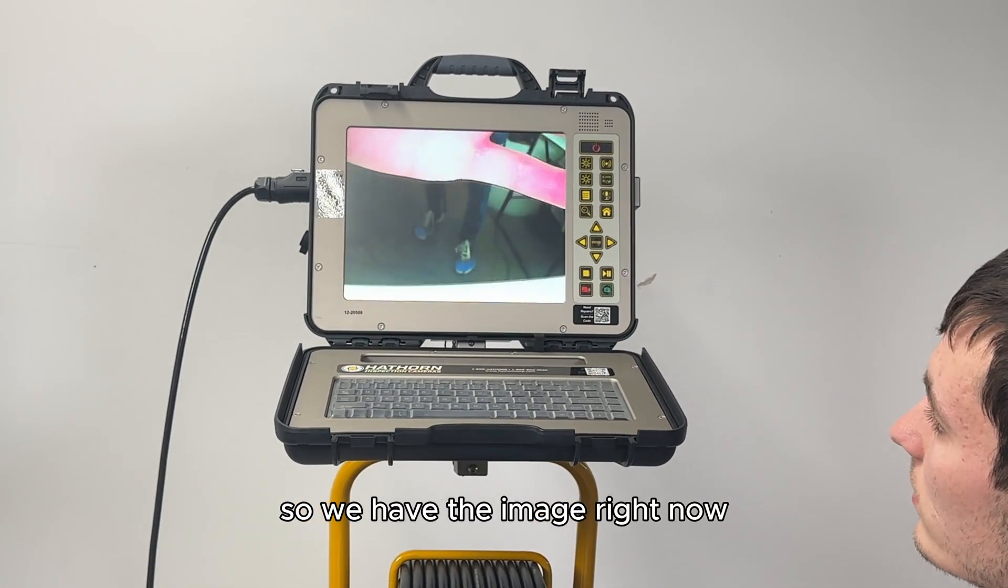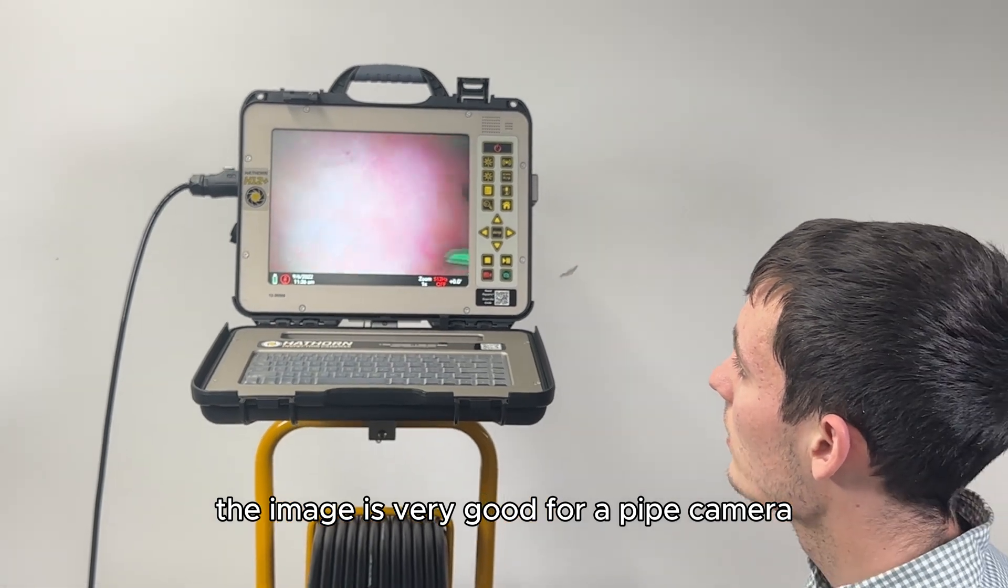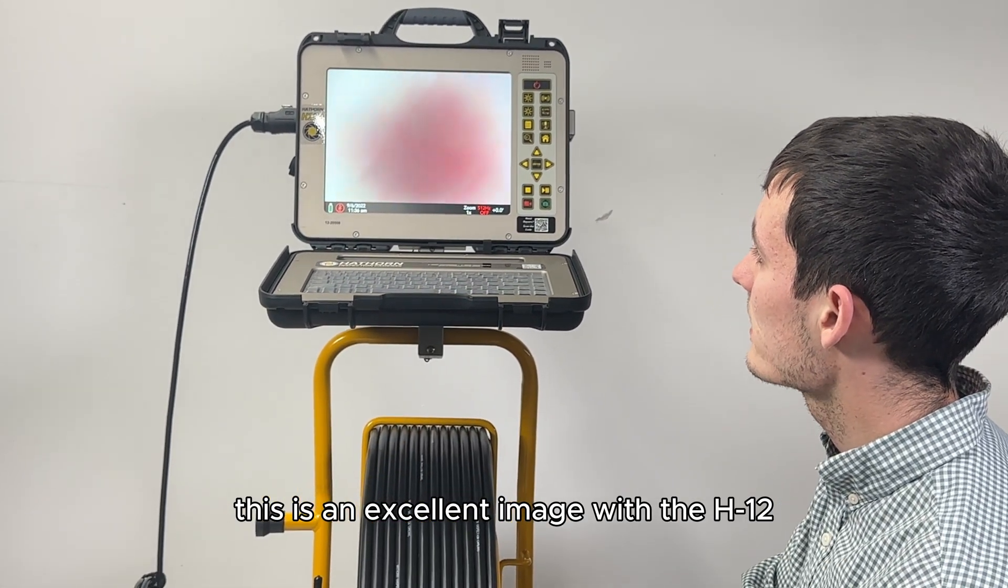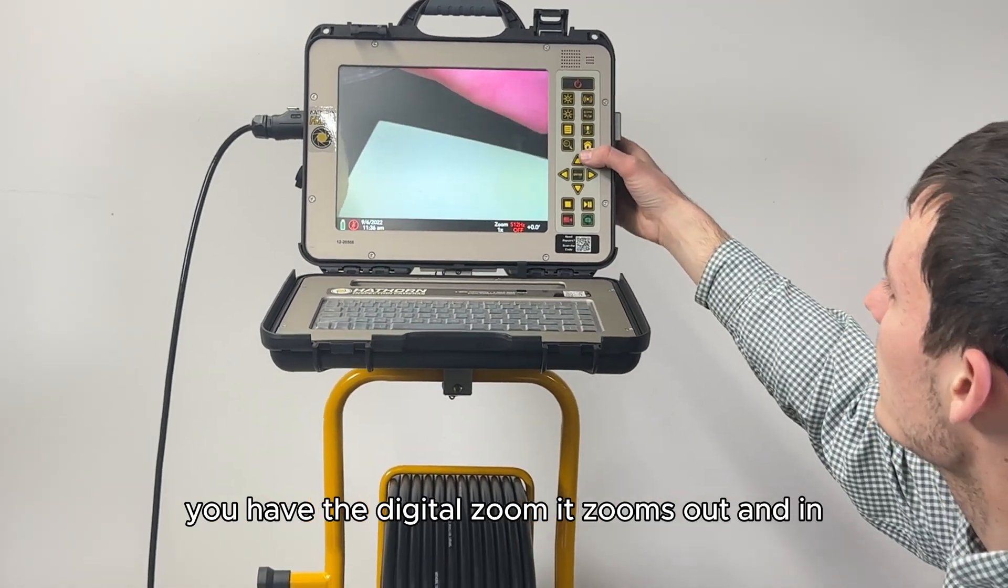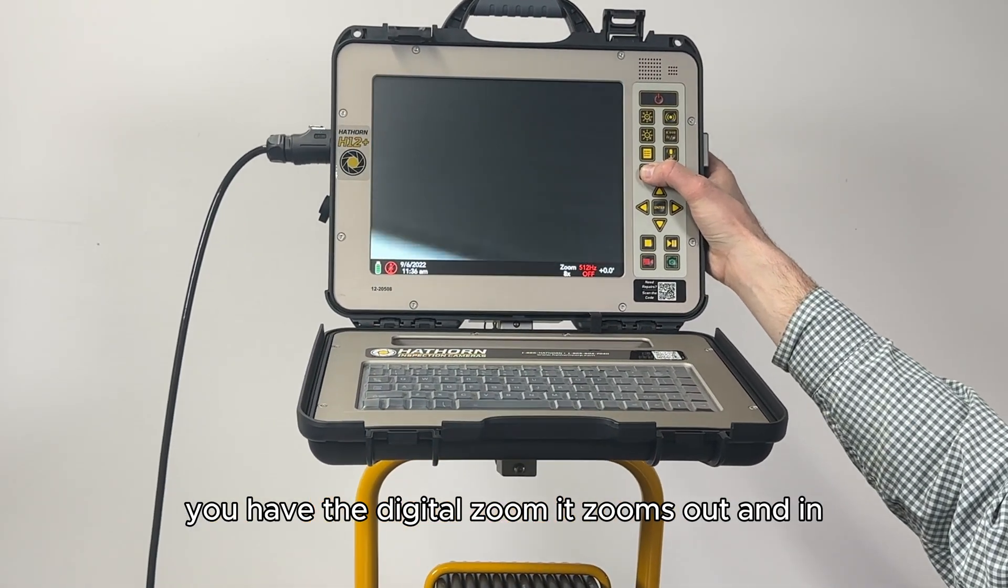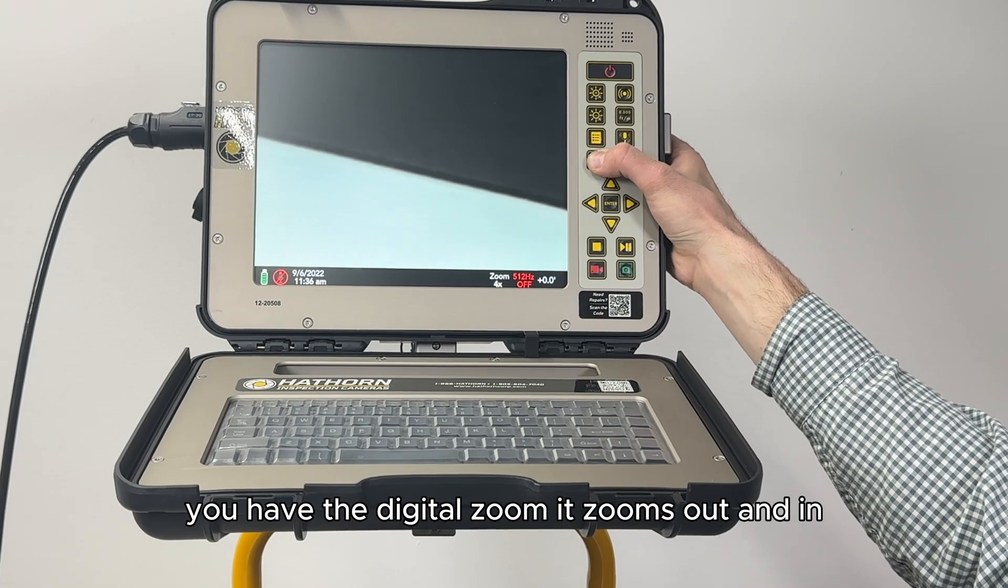So we have the image right now. The image is very good for a pipe camera. This is an excellent image with the H12. You have the digital zoom - it zooms out and in.